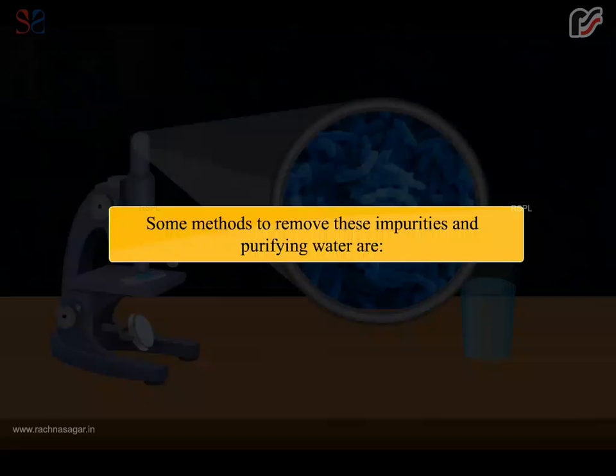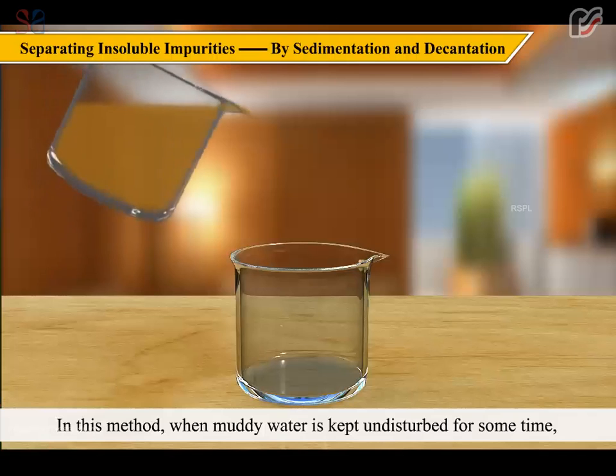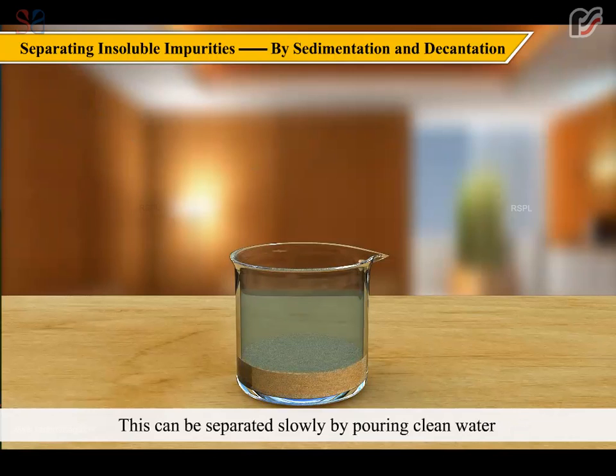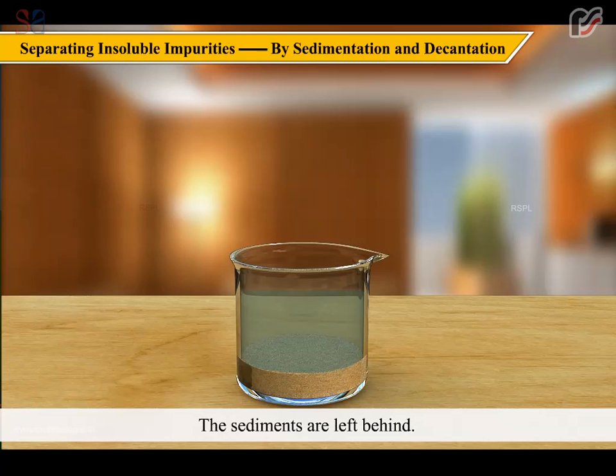Some methods to remove these impurities and purifying water are: In this method, when muddy water is kept undisturbed for some time, mud settles down and the clear water remains in the upper part. This can be separated slowly by pouring clean water, which is at the top, into another vessel. The sediments are left behind.